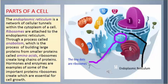The endoplasmic reticulum is a network of cellular tunnels within the cytoplasm of a cell. Ribosomes are attached to the endoplasmic reticulum. Through a process called anabolism, which is the process of building large proteins from smaller proteins called amino acids, ribosomes create long chains of proteins. Hormones and enzymes are examples of important proteins ribosomes create, which are essential for cell growth.